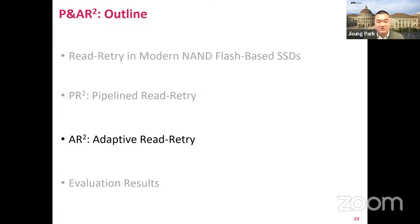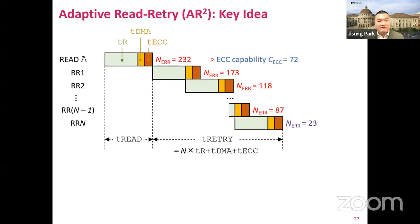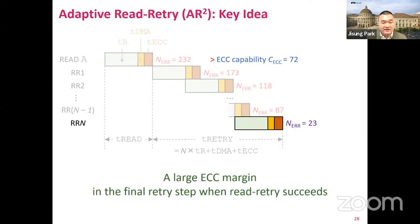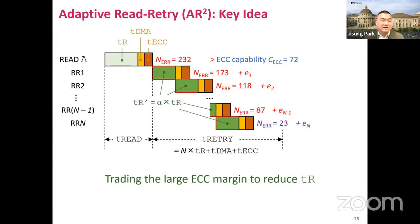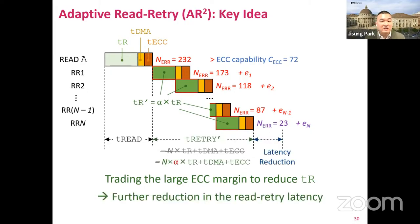Our second technique is called adaptive read-retry, or AR2 in short. Our key observation is that when read-retry eventually succeeds, there always exists a large ECC margin in the final retry step due to the use of a near-optimal read-reference voltage. In this figure, for example, there are only 23 bit errors in the final retry step, while the ECC can correct up to 72 bit errors. The key idea of AR2 is to trade the large ECC margin in the final retry step for reducing read timing parameters — meaning read latency for each retry step — which can further reduce read-retry latency on top of PR2.